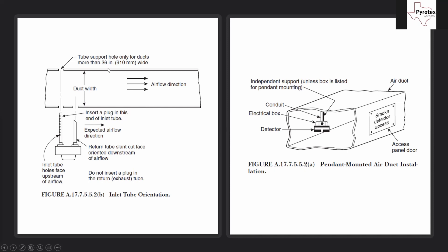Also note: for ducts more than 36 inches wide, you need to drill a support hole on the far side to feed the sampling tube through. For ducts 36 inches or less, just plug the end of the sampling tube. It's important to make sure that end plug is in place — otherwise the vacuum will draw air from the open end sticking out of the duct instead of from the perforated intake side, and you won't get an accurate air sample. The plug forces air to enter only through the perforated side.